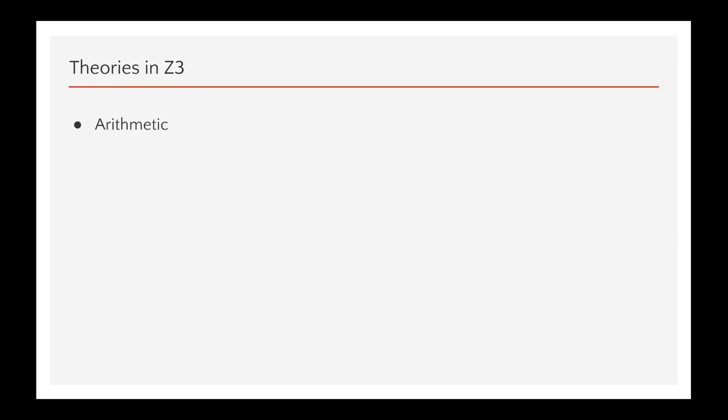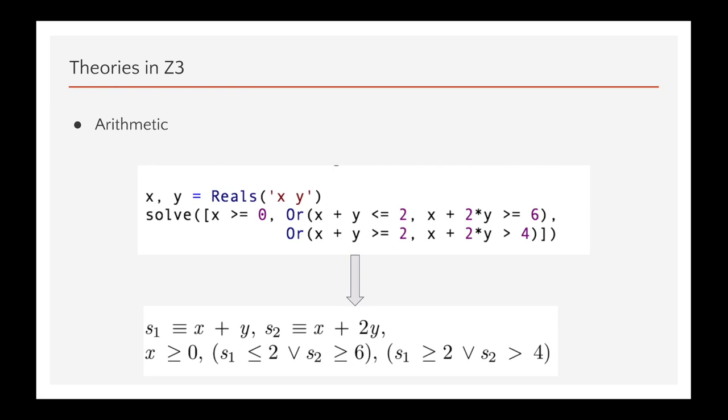The second theory is arithmetic. Z3 allows to solve a wide range of arithmetic theories such as real, integer, polynomial. This is an example using real values and this is the corresponding formula.